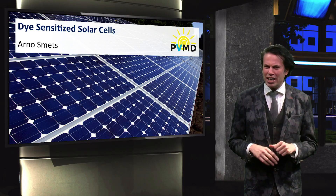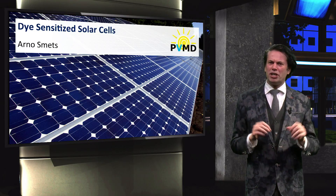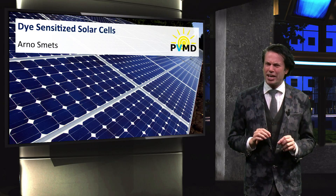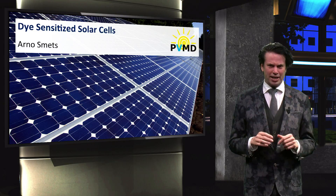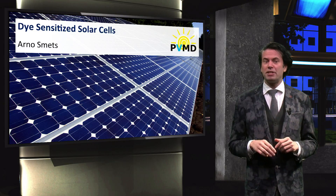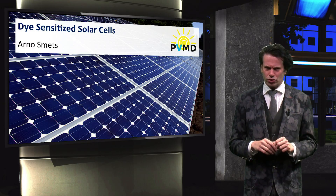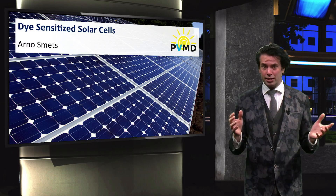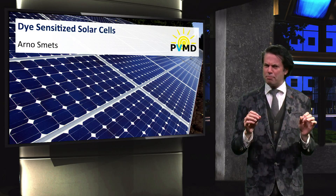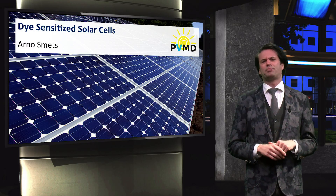In this section we quickly discuss a hybrid concept where the junction consists of both inorganic and organic compounds. This concept is the so-called dye-sensitized solar cell, often abbreviated as DSSC.